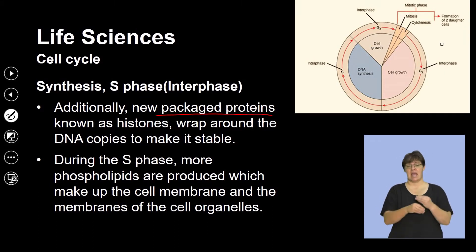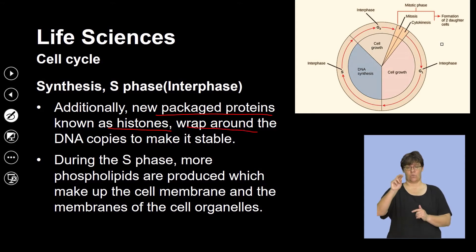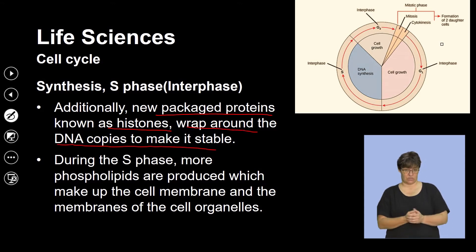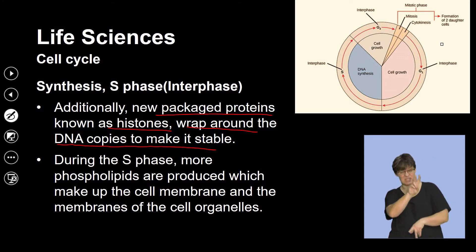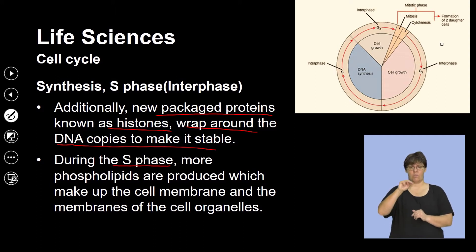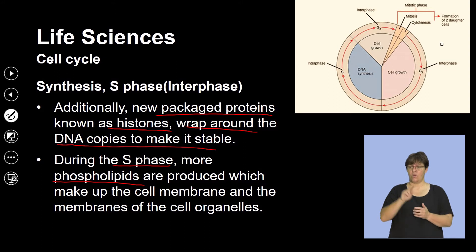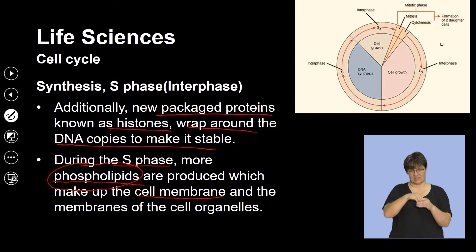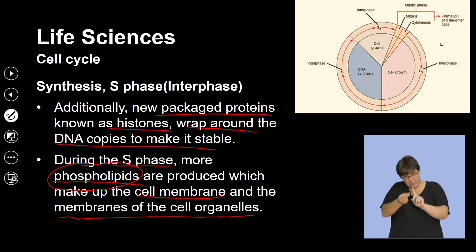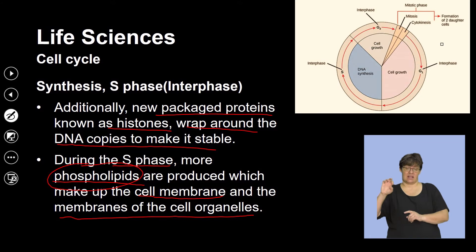Additionally, new packaged proteins known as histones are produced, and these wrap around the DNA copies to make it stable. We will look at what this means when we discuss what a chromosome is. During the S phase, more phospholipids are produced — these are complex proteins and fats that make up the cell membrane and organelles needed in the next stage of the cell cycle.